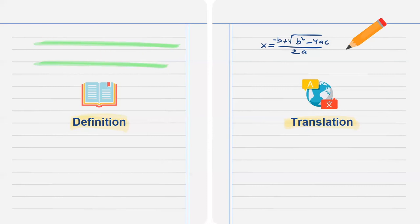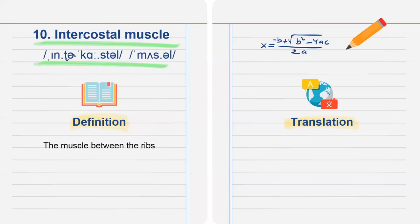Number 10 is intercostal muscle, the muscle between the ribs. Translation: cơ liên sườn.